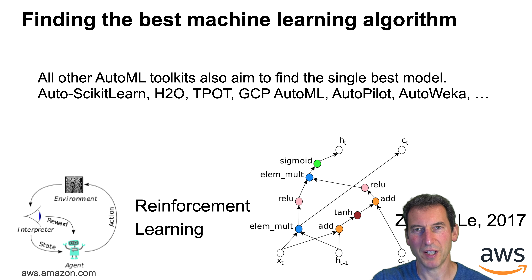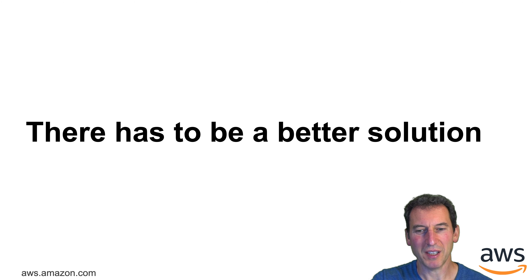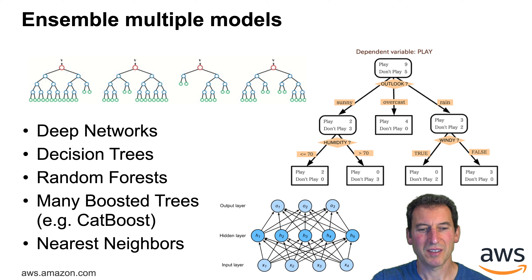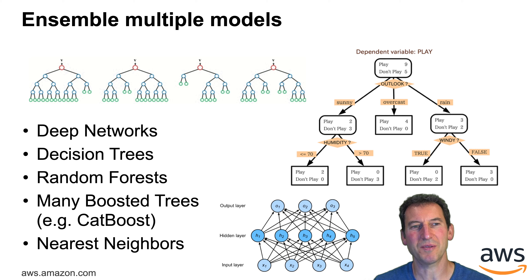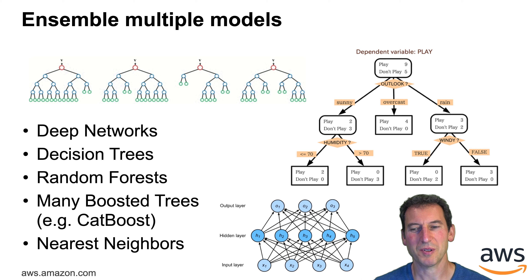They try to find a snowflake. We argue that there has to be a better solution — namely, rather than picking individual snowflakes, we pick an entire snowball. In other words, we assemble multiple models: deep networks, trees, forests, boosted trees, nearest neighbors. And this works better.